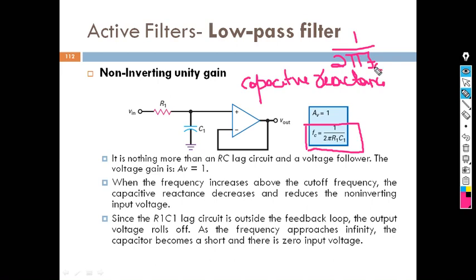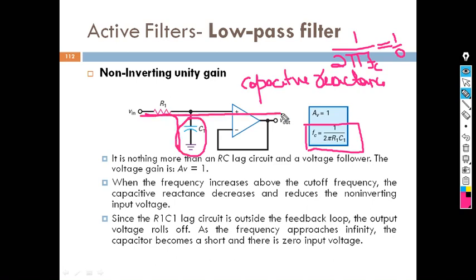When the frequency is 0 — that is, for a low frequency component — if fc is 0, what is the value of 1 by 0? It is infinity. That means the capacitor will provide infinite resistance, so low frequency components cannot pass through the capacitor; they have to pass through the main path only. So this is our low pass filter.